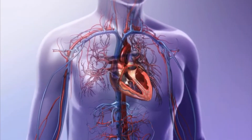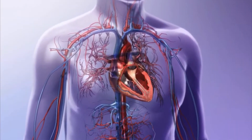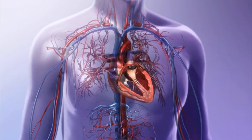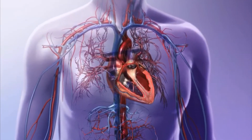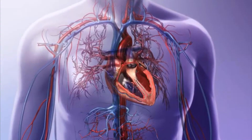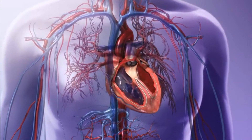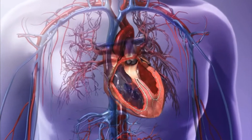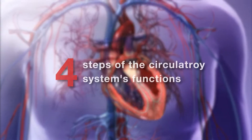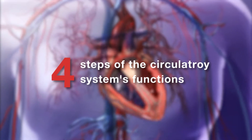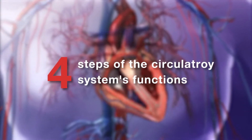Blood must circulate to sustain life and carries oxygen to cells throughout the body. The heart circulates blood through the arteries, capillaries, and veins. Let's go through the circulatory system's functions.